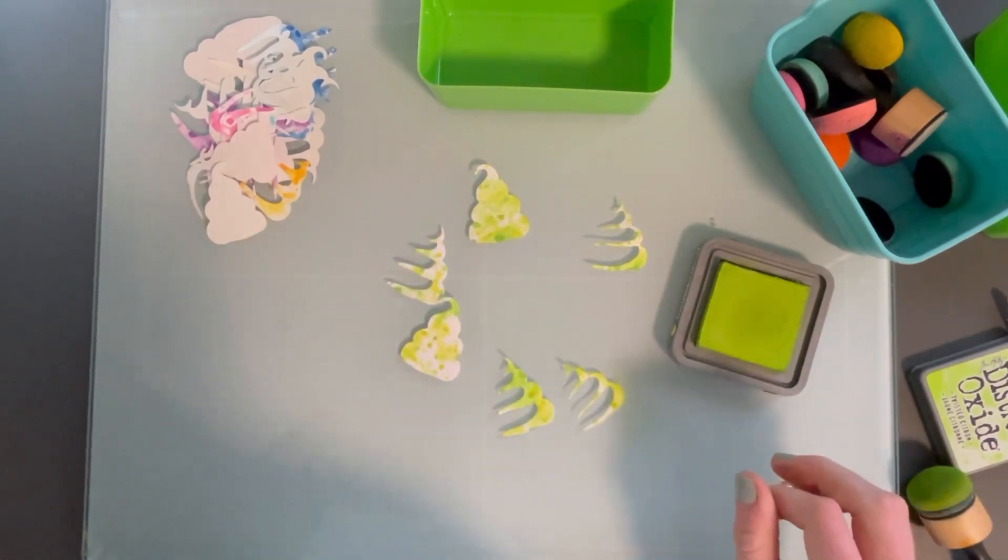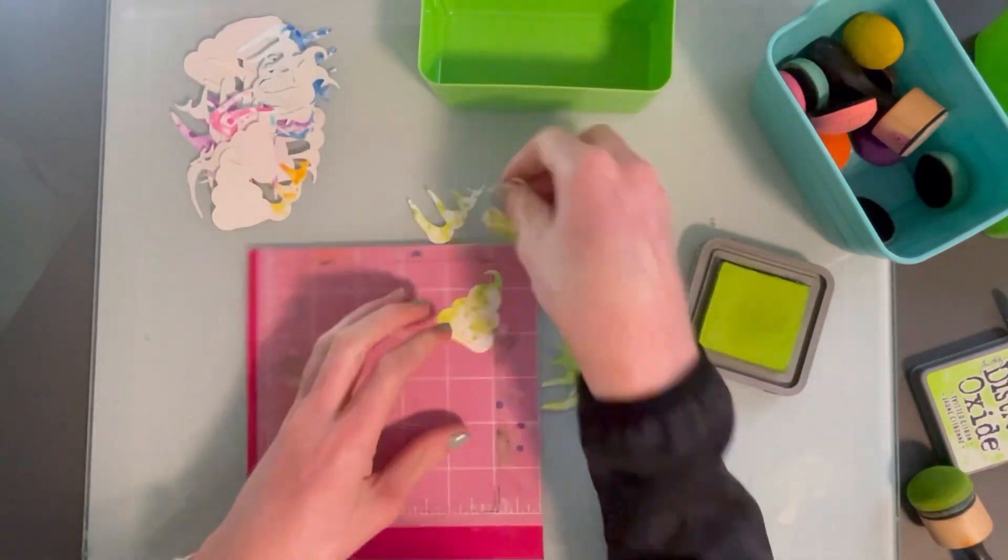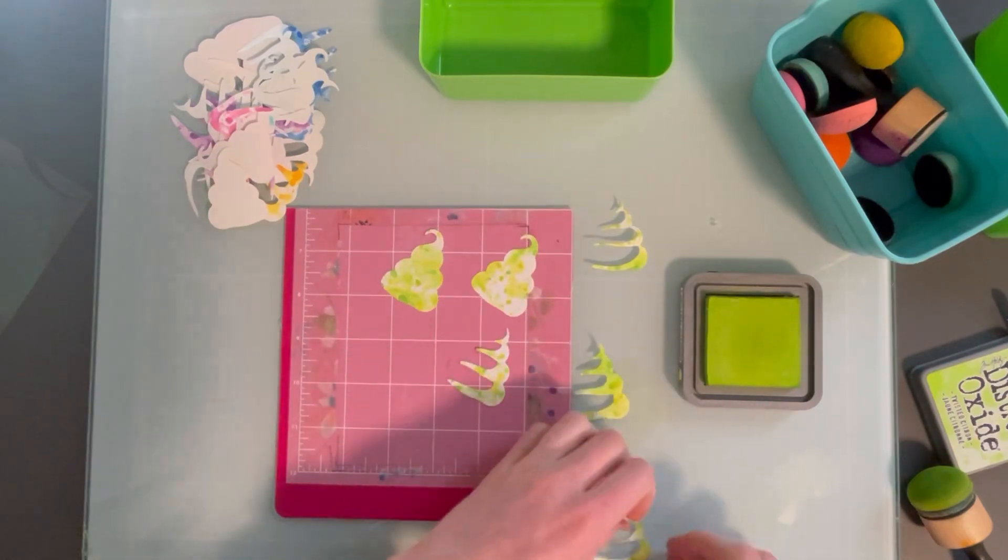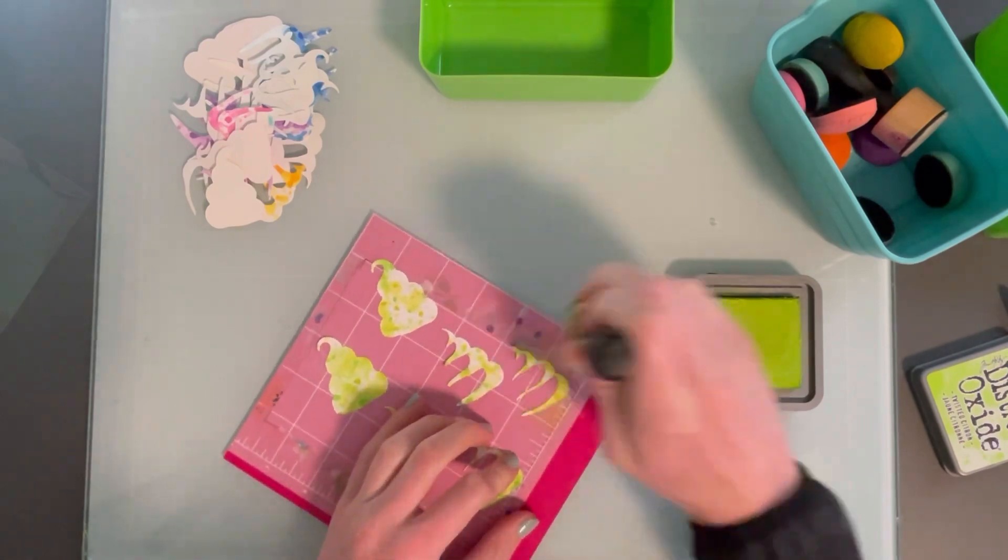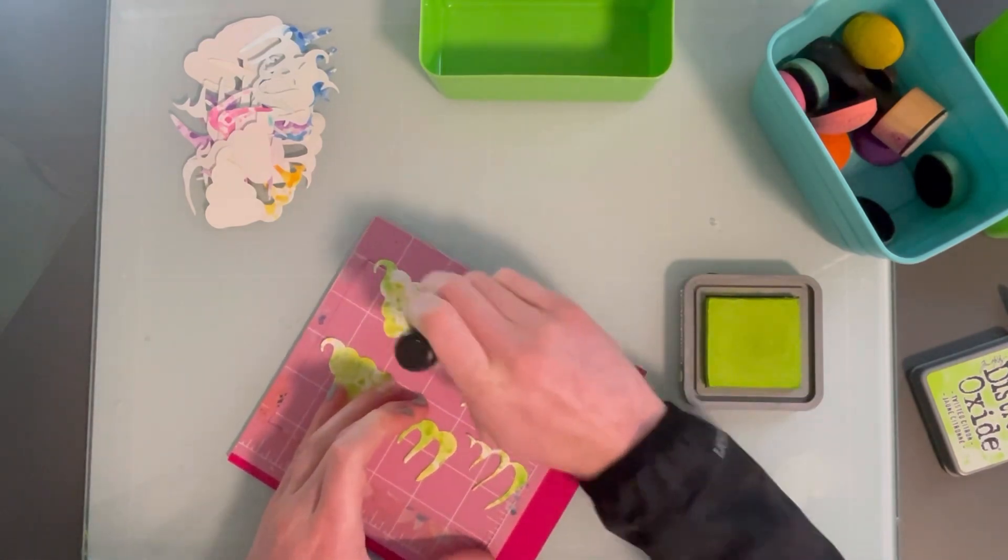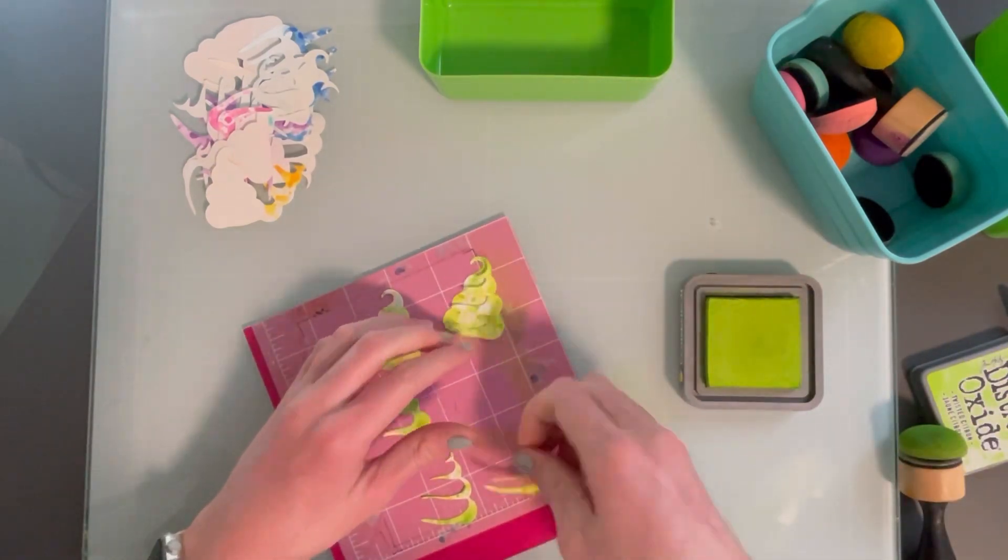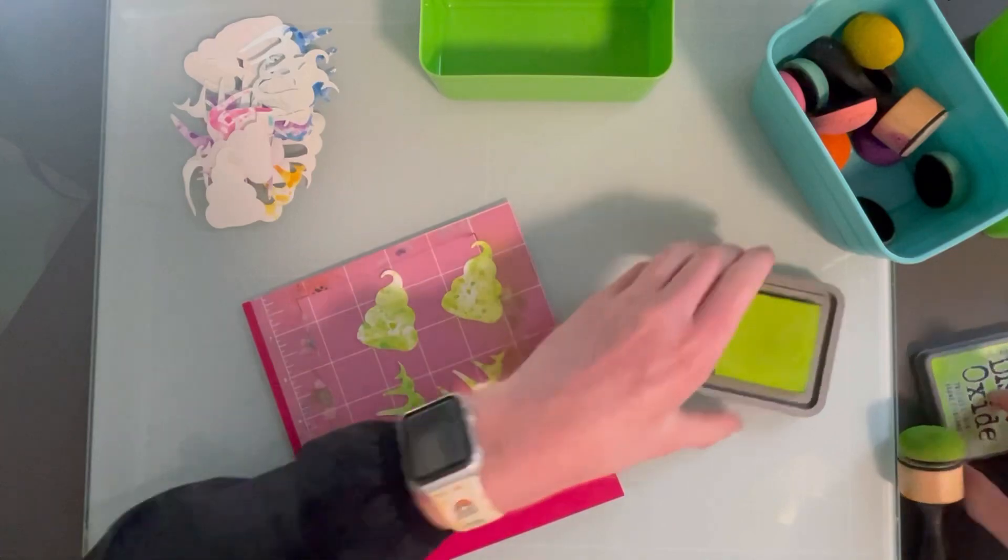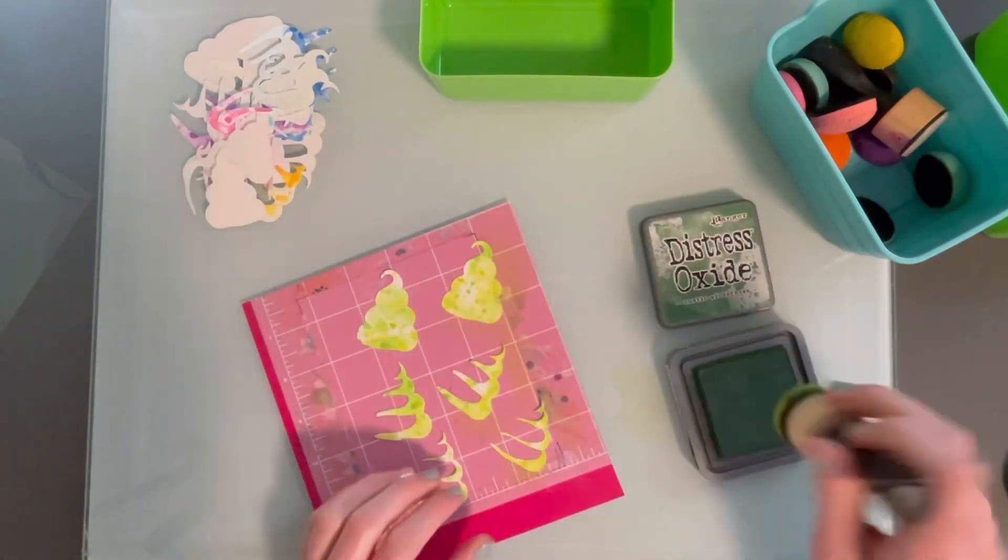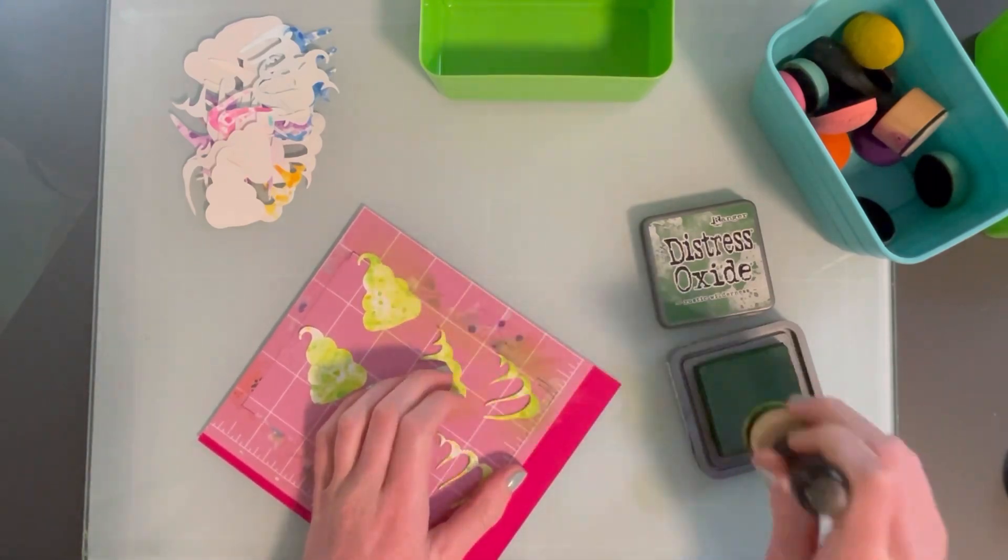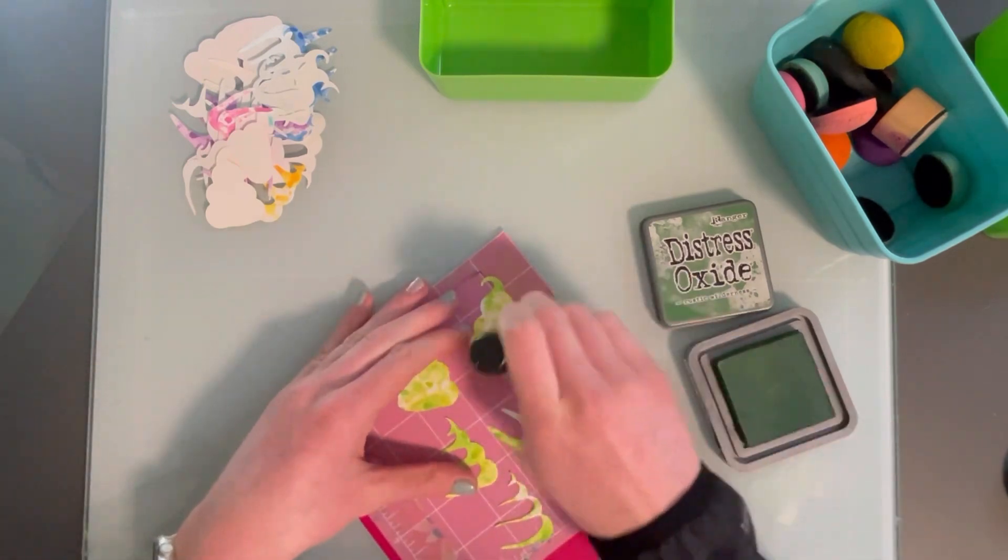Next, I thought these needed a little bit more dimension. So I actually brought in some Distress Oxide inks for this. And I'm just, actually I decided to use the sticky mat. This is actually an old Cricut mat that I had, and I thought it would work to make sticky mats out of, so I just cut it down. But I just ink blended a little bit of Distress Oxide ink in kind of the right-hand side and bottom.